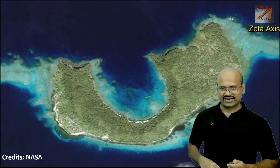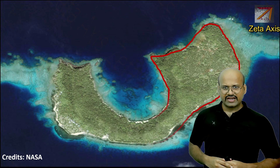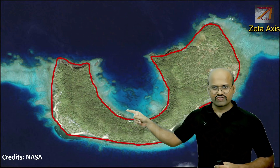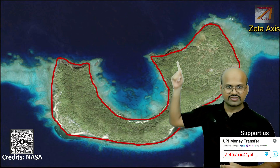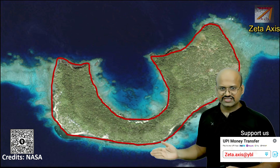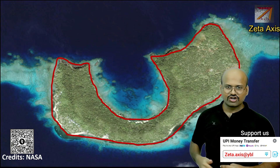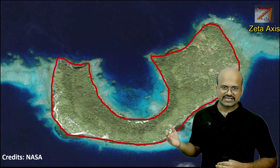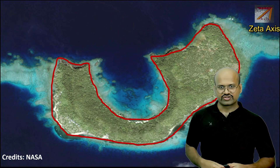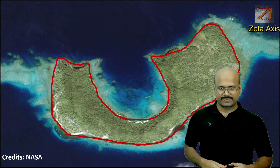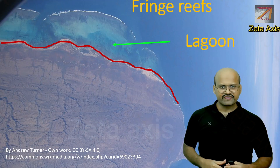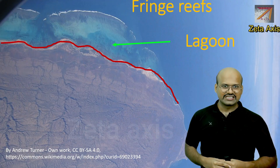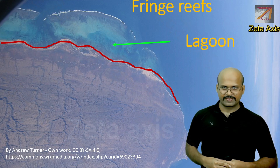Here is an example of coral reef formation. We can see this island — the red margin shows the boundary of the island — and all the surrounding areas are coral reefs, very close to the coastline with no lagoon in between. These are fringe reef formations, the most common type of coral reefs in the world.